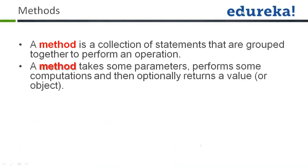Now we come to methods. A method takes some parameters, performs some computations, and then optionally returns a value. Whenever you want to create a functionality — like addition or subtraction — you can make a method. This way you will be modularizing your application. You can call that method at many places, reducing redundant code and reusing the code.